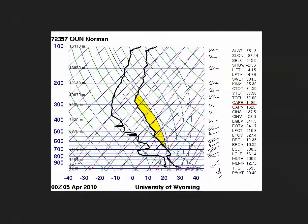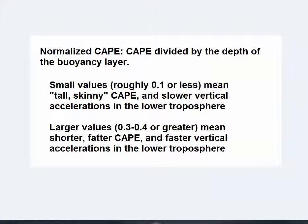There are some techniques that exist to try to level the playing field for tall, skinny CAPEs versus shorter, fatter CAPEs. The Storm Prediction Center has plots of normalized CAPE, which is CAPE divided by the depth of the buoyancy layer. Smaller values of normalized CAPE, around 0.1 or less, suggest tall, skinny CAPE. Meanwhile, larger values of 0.3 to 0.4 or even higher indicate shorter, fatter CAPE and potentially faster vertical accelerations in the lower troposphere.